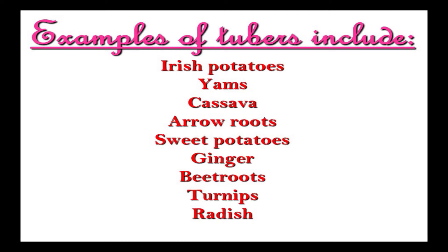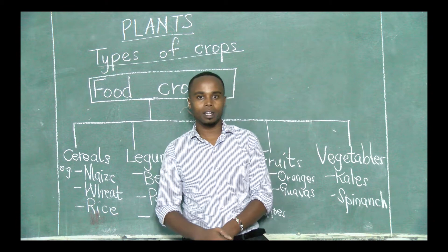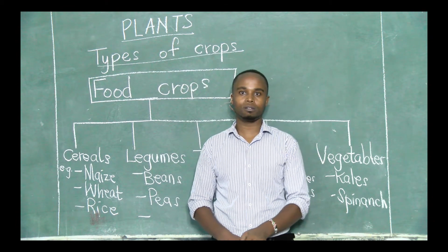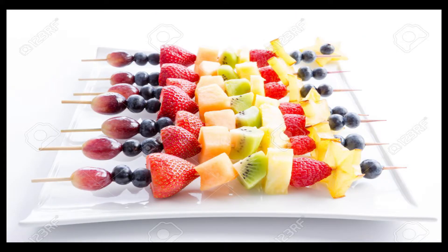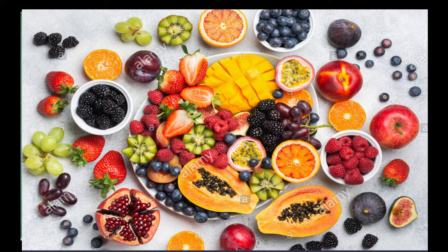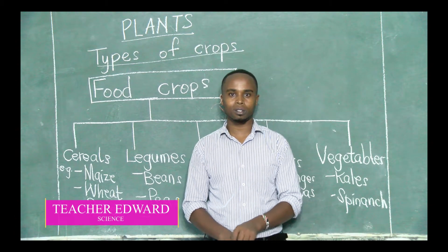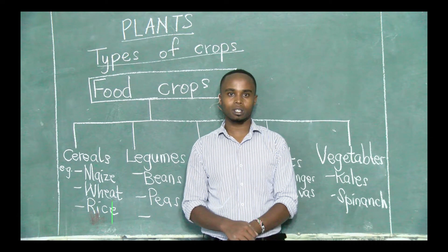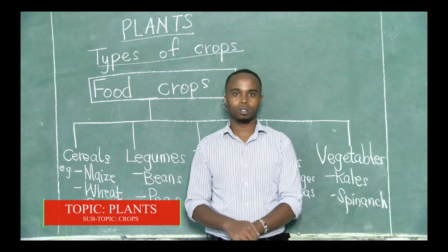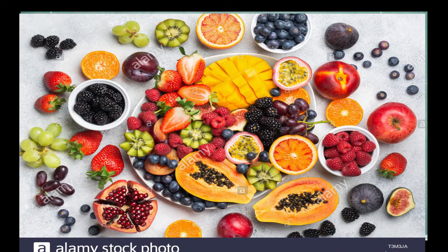I know you have mastered some of the examples. So I want you to add five more examples and make sure you remind yourselves about them. The next group of food crops — we have fruits. You all know fruits. We normally say that a fruit a day keeps the doctor away. Fruits are very important in our lives — they boost our immunity. If you want to be healthy and not fall sick now and then, make sure that you become a friend of fruits.